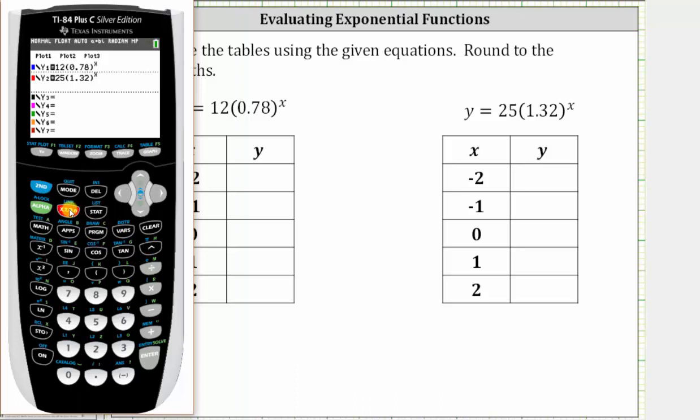And now before we go to the table, let's make sure the table is set up correctly. We want the x values to start at negative two and increase by one.